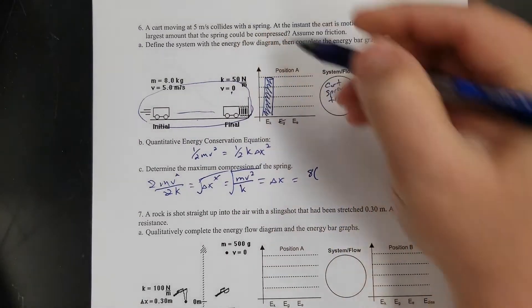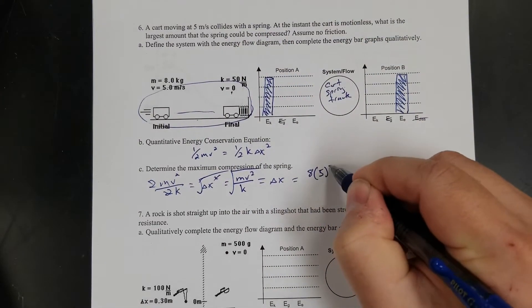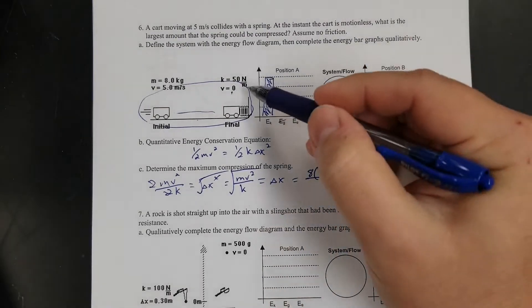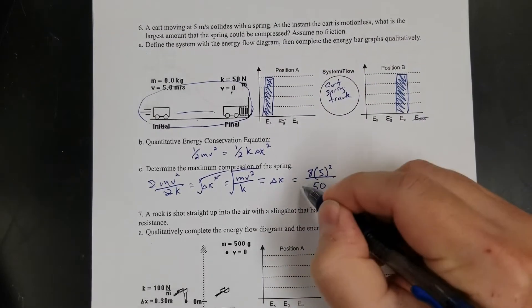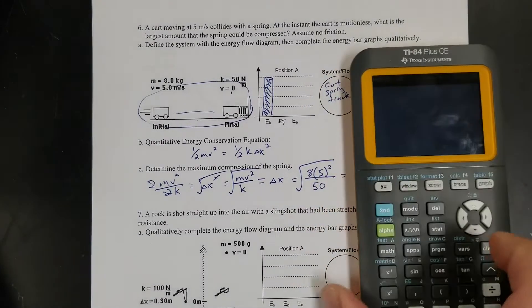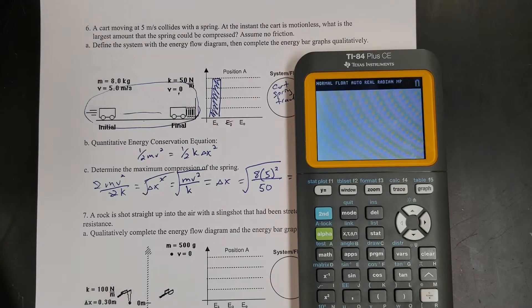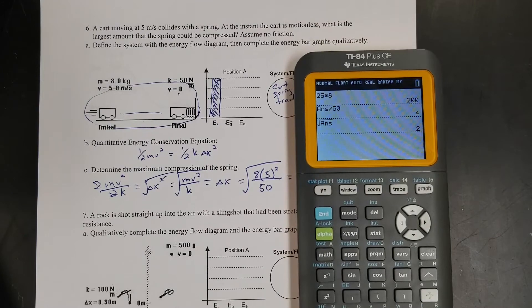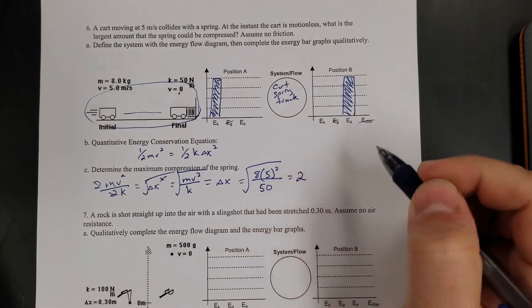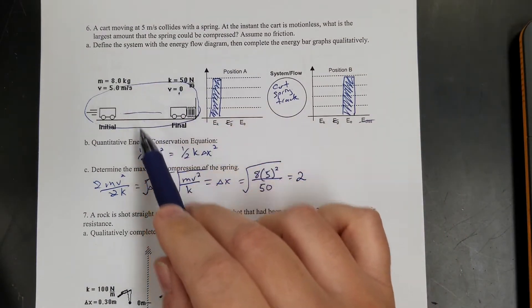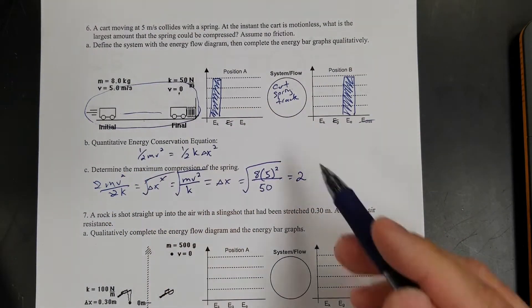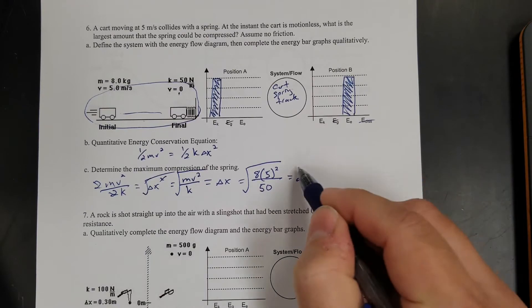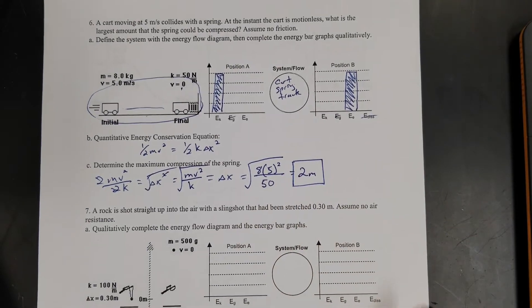So let's plug in and solve. So the mass is 8, so 8 times 5 squared divided by the spring constant, which is 50 newtons per meter. And I'm going to square root that. 5 squared is 25, so 25 times 8 divided by 50, and then I'm going to square root that. 2. Did I make sure I didn't miss any units? Everything's in meters. So it's going to compress the spring 2 meters.